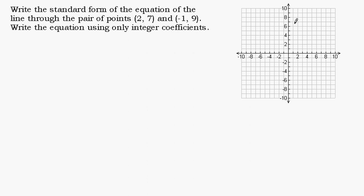So 2, 7. Over 2, up 7 would be right there. And then (-1, 9) would be left 1, up 9, about right there. So there's a line that goes through these two points. As a matter of fact, there's only one line that goes through these two points.